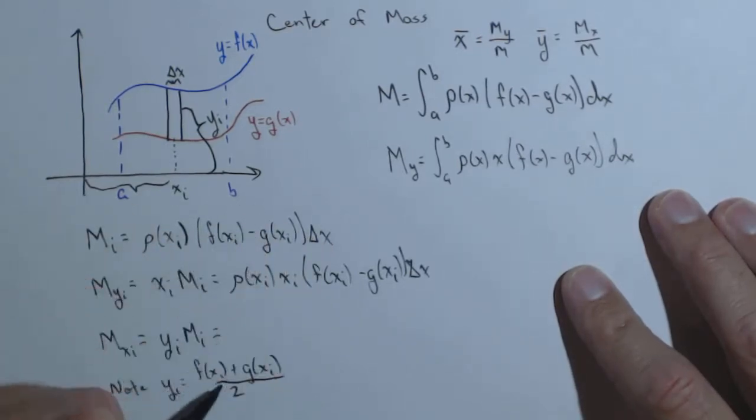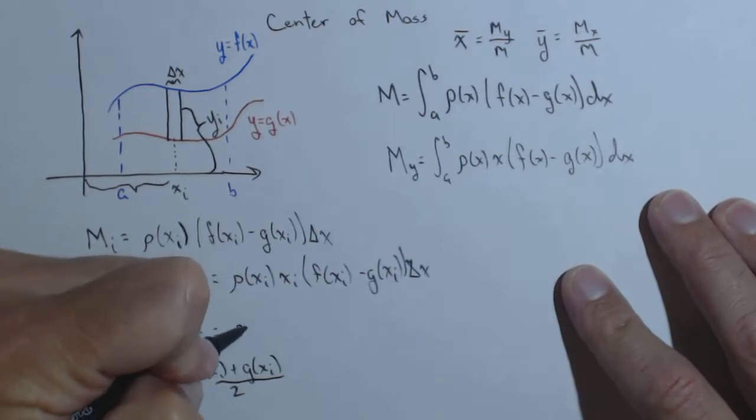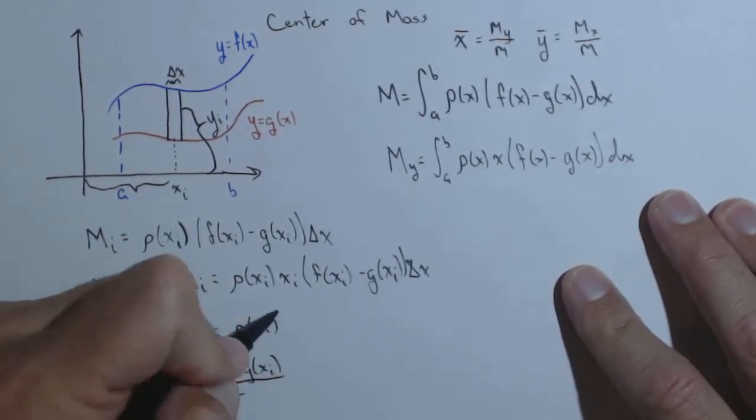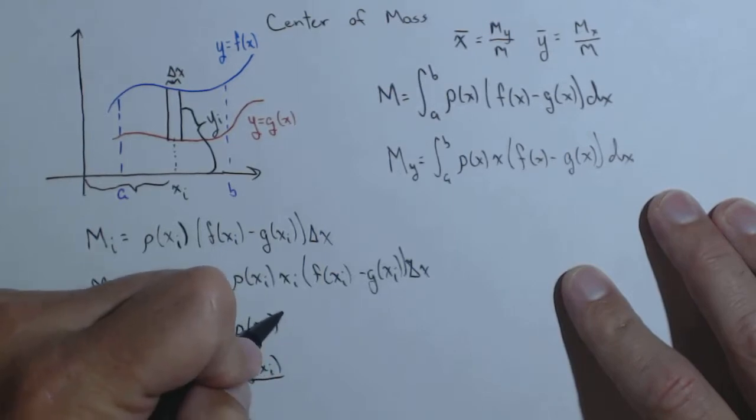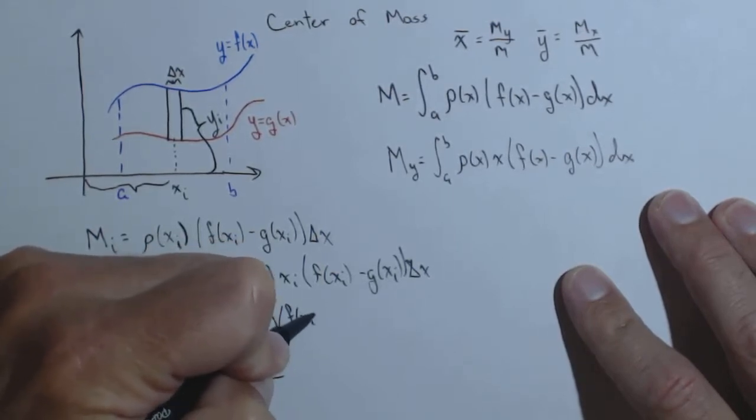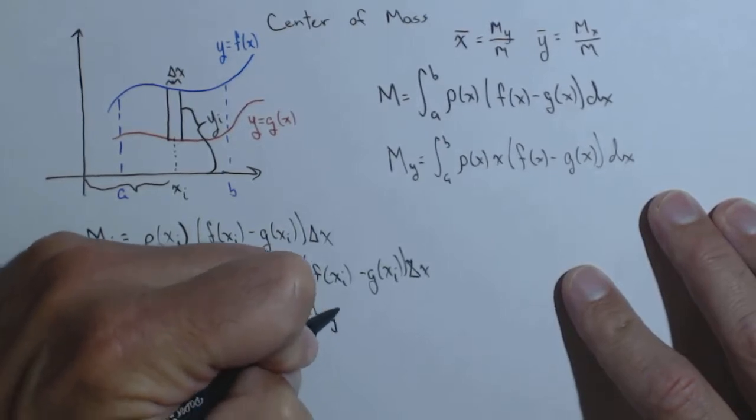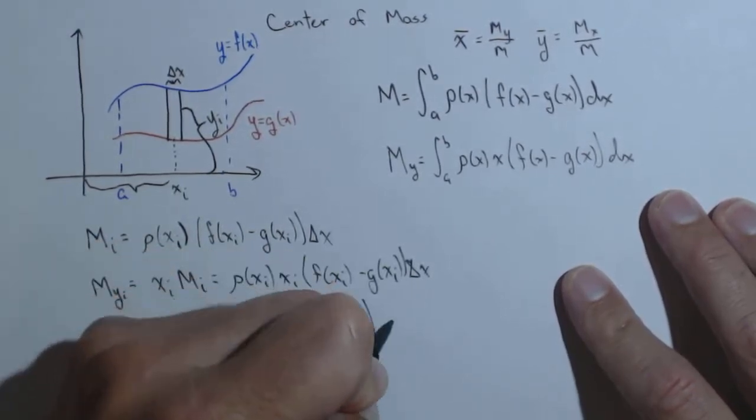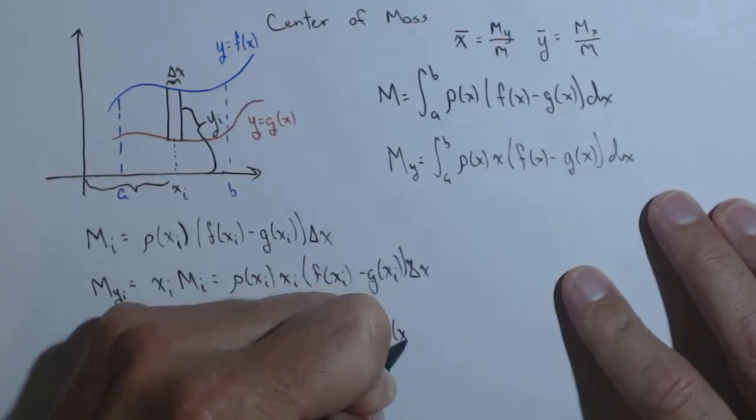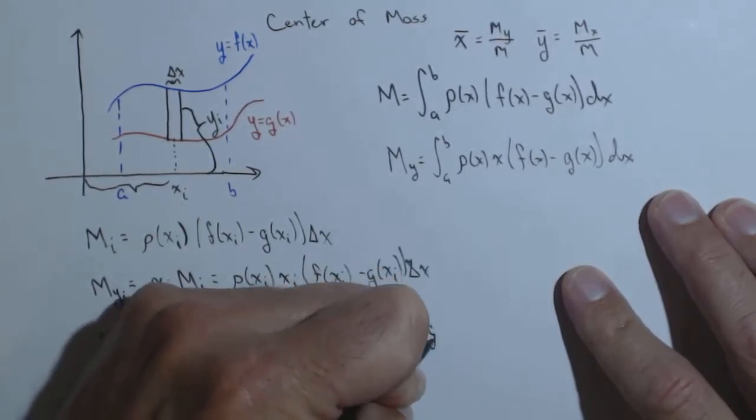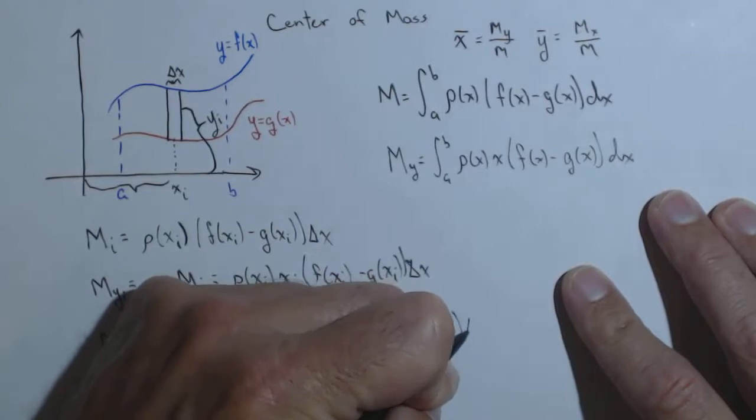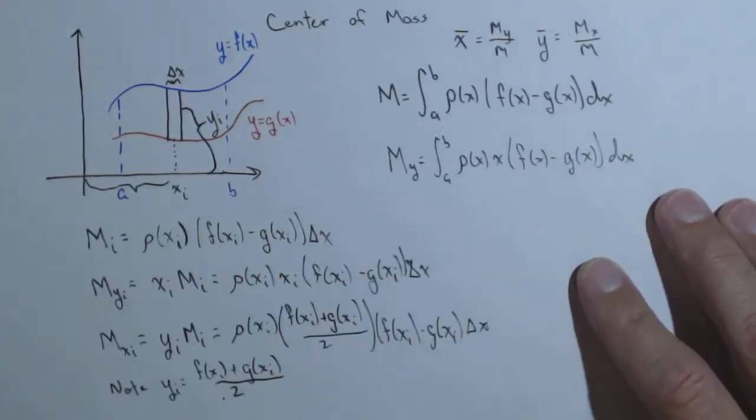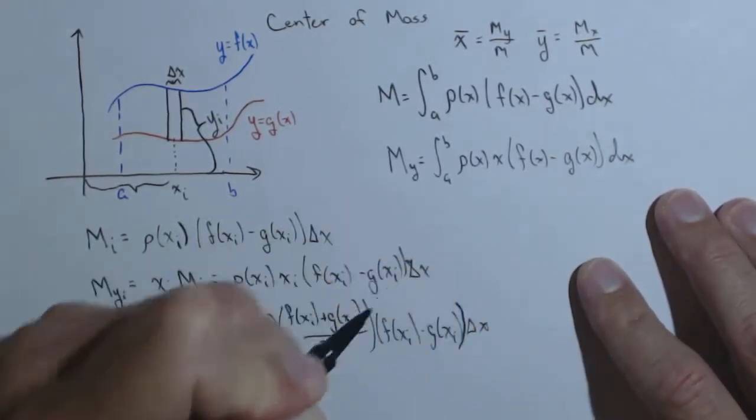So it's still m sub i. And again, I'm going to write rho out front, rho of x sub i. Now, normally here would be the y sub i, but I'm going to go ahead and make this substitution: f of x sub i plus g of x sub i over two times f of x sub i minus g of x sub i delta x. And missing a parenthesis.